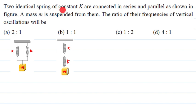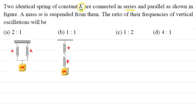Fifth question: two identical springs of constant k are connected in series and in parallel as shown in figure. A mass m is suspended from them. The ratio of their frequencies of vertical oscillations will be? For parallel combination, the two springs have effective force constant Kp, and for series combination, effective force constant Ks.